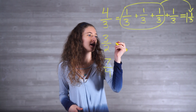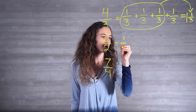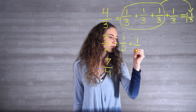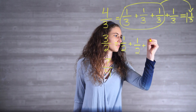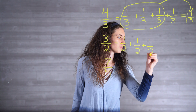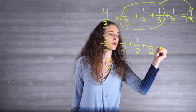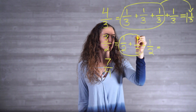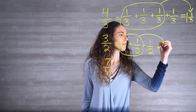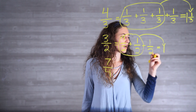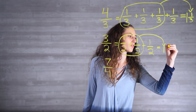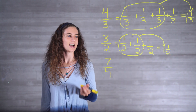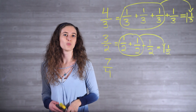3/2 can be visualized as 1/2 + 1/2 + 1/2. We know that 2 halves — 2/2 — makes 1 whole, and we're left with 1/2 left over. So 3/2 as a mixed number is 1 and 1/2.